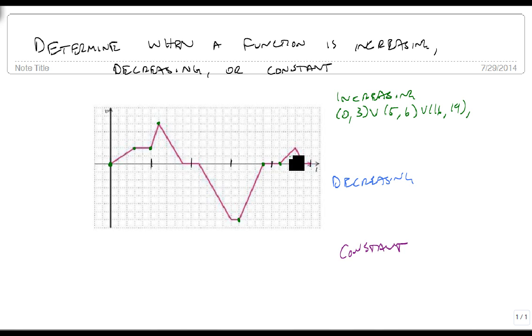And then from 21, whoops, not a comma, that should be a union, 21 to 23 it's increasing. So those are all the points that it's increasing because our line is going up.